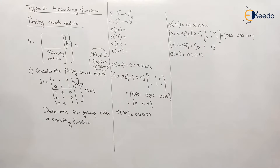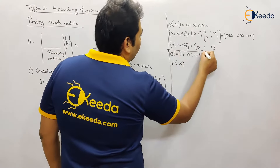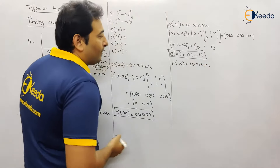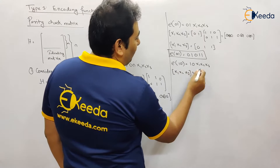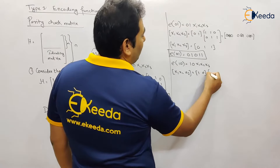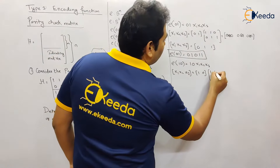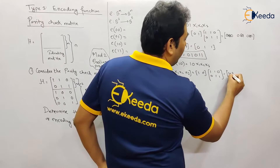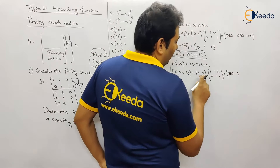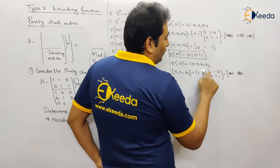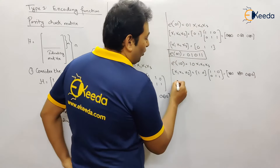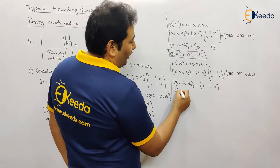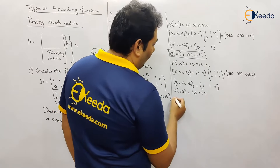Now let's find e(10). The first two digits are fixed as 10, and we again find x1, x2, x3 using [1, 0] mod-2 boolean product with the non-identity matrix [[1,1,0],[0,1,1]]. Calculating: x1 = (1·1 XOR 0·0) = 1, x2 = (1·1 XOR 0·1) = 1, x3 = (1·0 XOR 0·1) = 0. So x1 x2 x3 = 1 1 0, and the code for e(10) is 10110.